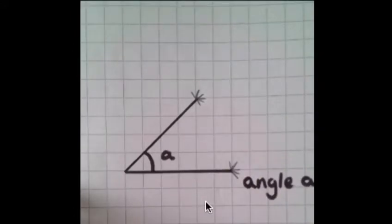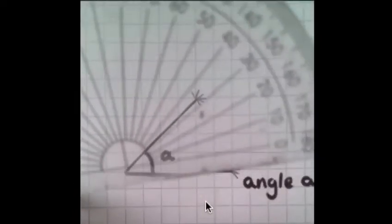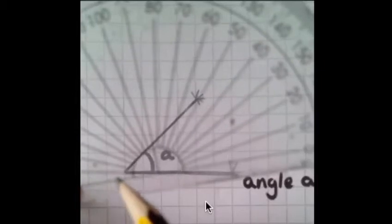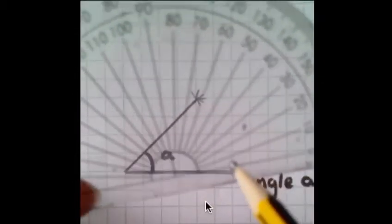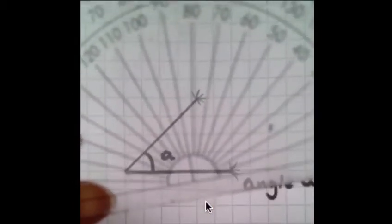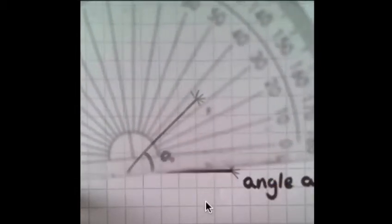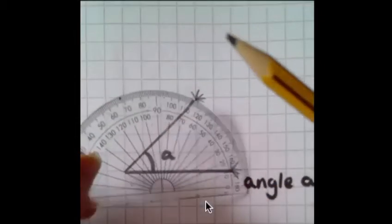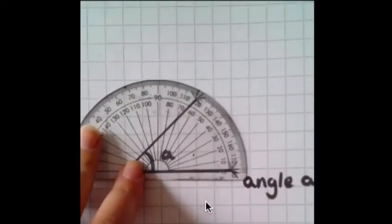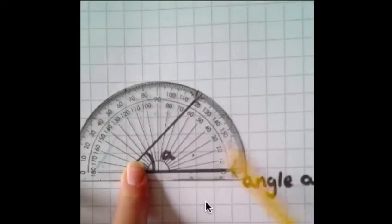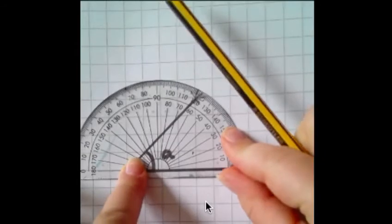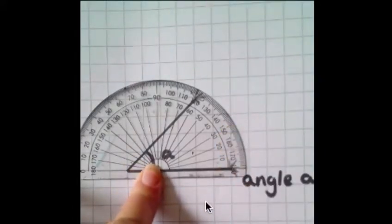Now I need to place my protractor baseline on the angle's baseline. The protractor baseline, it's quite hard to see because it's transparent, is this one here. You're going to place that on your angle baseline. Pop that on there like that. Placed my protractor baseline on my angle baseline.